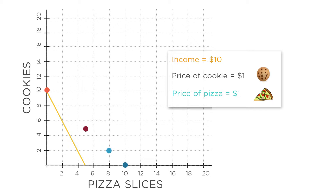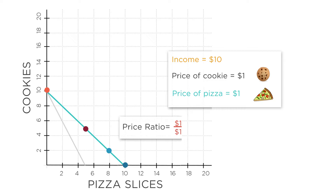Connecting all these points, we see that the price decrease looks like rotating the budget constraint outward. That makes sense — your income hasn't changed at all, so when the price of a good drops, you can afford more of it. And since the price ratio is different, the slope will change. The budget line rotates outwards because you can afford more.